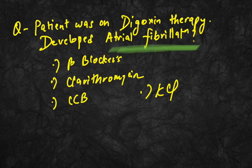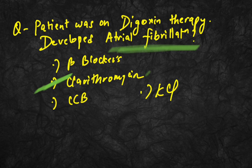A patient on digoxin therapy who suddenly developed atrial fibrillation — which drug is responsible? Clarithromycin is the answer, as it causes atrial fibrillation in patients on digoxin therapy. These were the 10 questions, and more are coming so stay tuned.